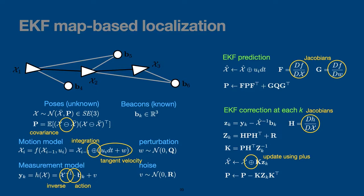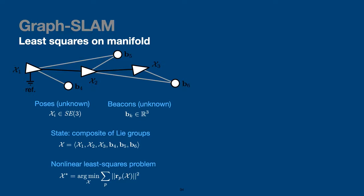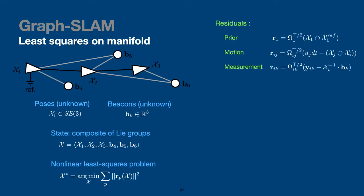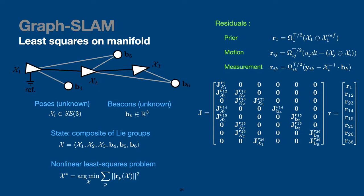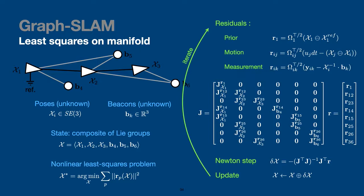The second example uses smoothing and mapping with least-squares techniques. Both robot poses and beacons are unknown. We organize a state vector as a composite of Lie groups — three poses and three landmarks — and minimize a least-squares problem: write residuals for each measurement, build Jacobians, compute the final residual, compute the Newton step, update the state, and iterate. This is iterative least squares for nonlinear systems. Again, the plus and minus operators appear at sensitive places.